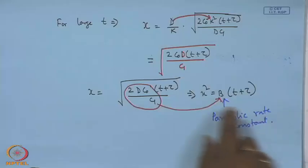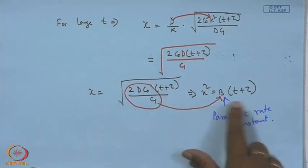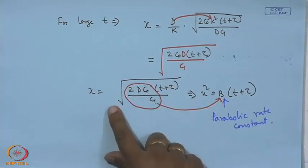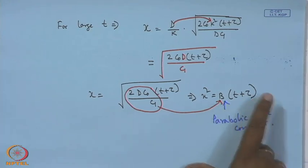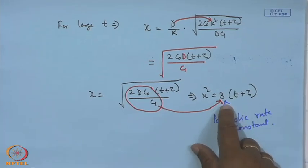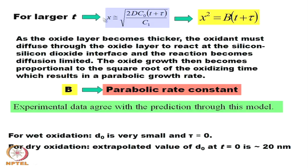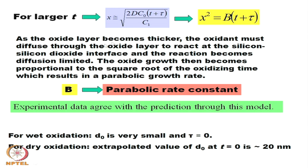When time is increased — for large t — we have x² = B(t + τ), which is the parabolic rate constant. As the oxide layer becomes thicker, the oxidant must diffuse through the oxide layer to react at the silicon–silicon dioxide interface, and the reaction becomes diffusion limited.